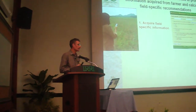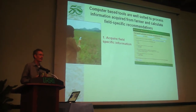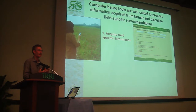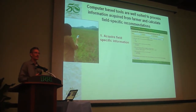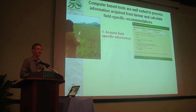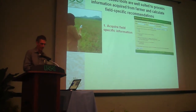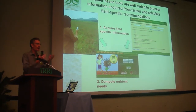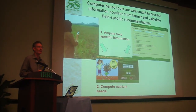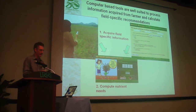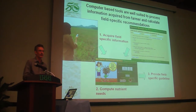This basically requires a three-step process. The first step is acquiring information about a specific field — that can be by using a set of questions on the internet, or by using questions that can be answered with a mobile phone. Those answers are then processed in the Nutrient Manager software, and that leads to a fertilizer recommendation for a specific field that is passed on as a recommendation to the farmer.